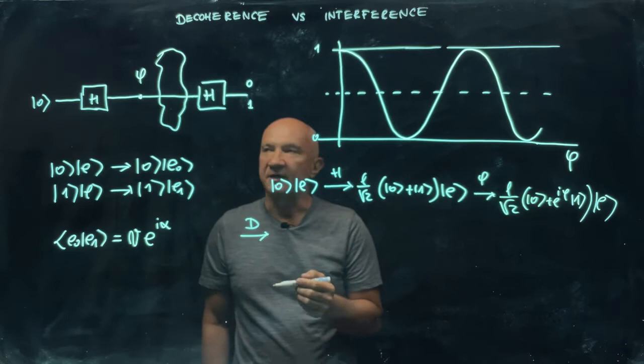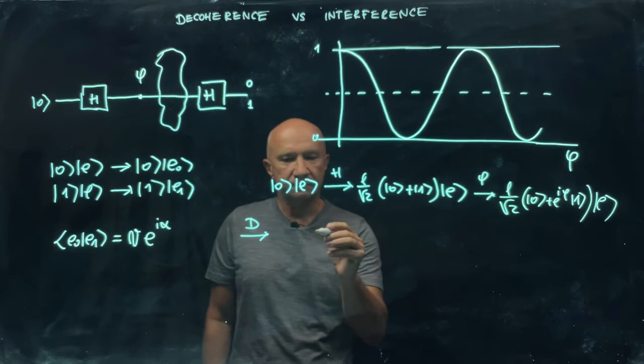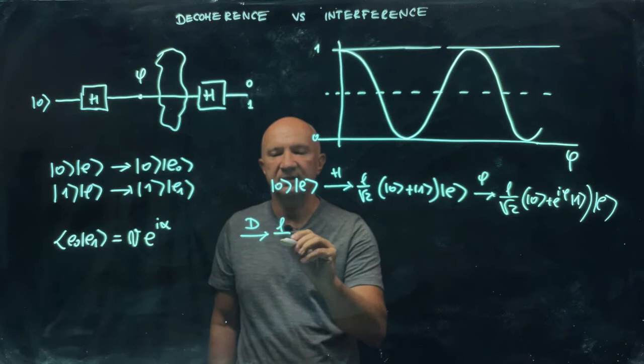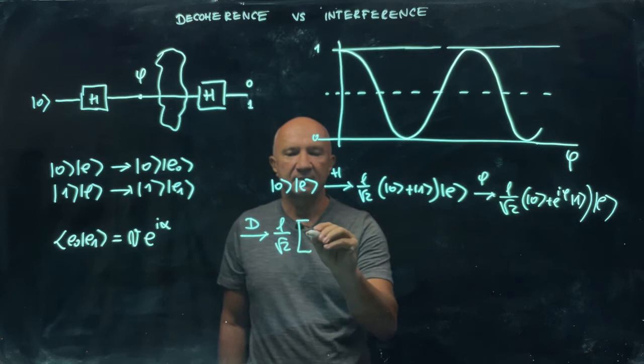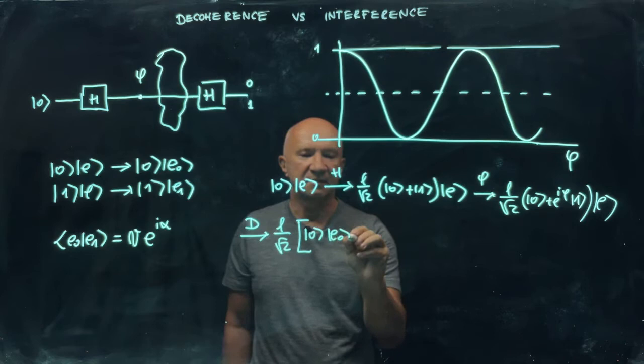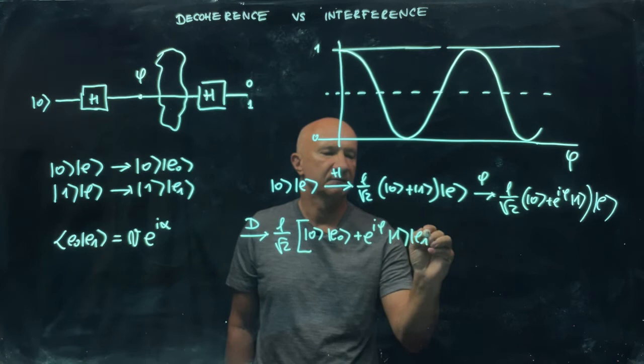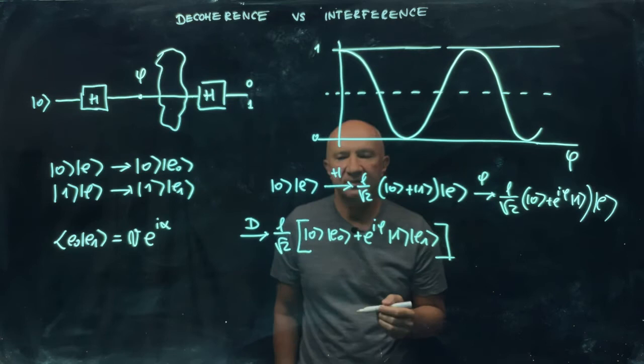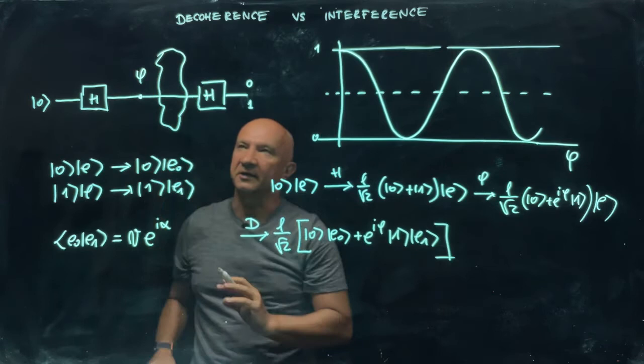So then the interesting part happens. Because we have decoherence now. So decoherence hits the qubit. And the environment is trying to find out whether the qubit is in state zero or in state one. So that means that the qubit is entangled with the environment after this interaction. So we have the state one over square root of two. And here we have zero environment in state E0 plus e^(iφ) one E1.